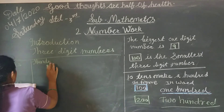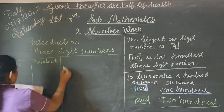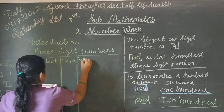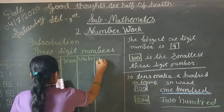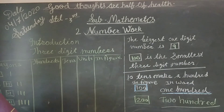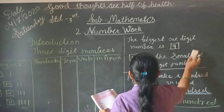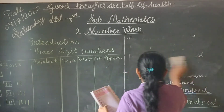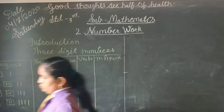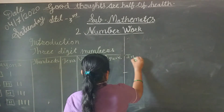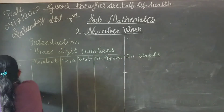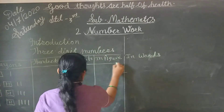We use a place value table with three columns: Hundreds, Tens, and Units. In figures and in words, we write numbers using this table.